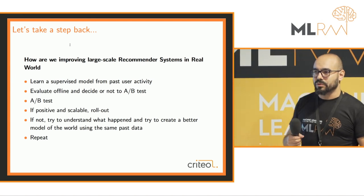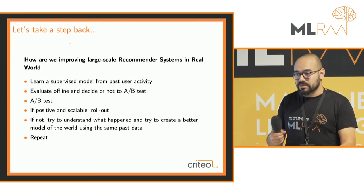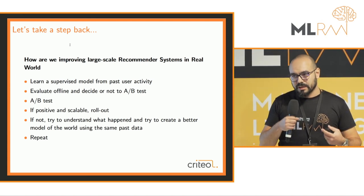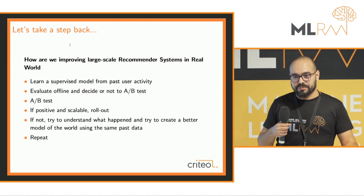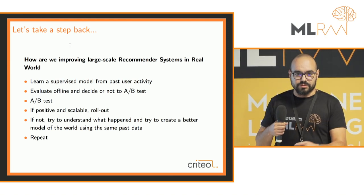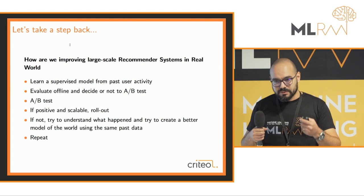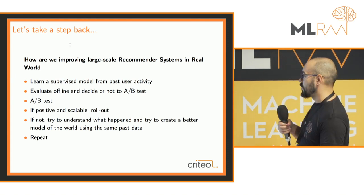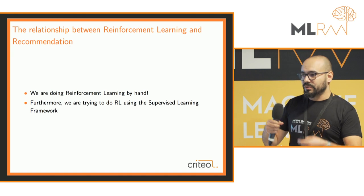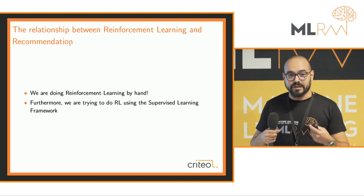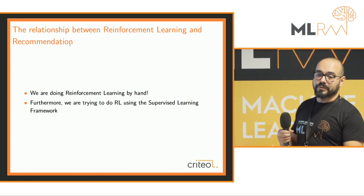We know offline improvement doesn't always translate online. If you look at what happens when we try to improve models in reality: we learn a supervised model, fit past user activity, evaluate offline, A/B test, and iterate. If you look at this whole loop, we're really doing reinforcement learning by hand — collecting data, learning something, acting, collecting rewards — but very slowly and very error-prone. We use the wrong tool for this job: the supervised learning framework.